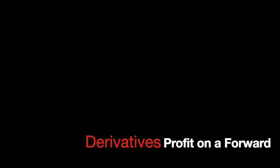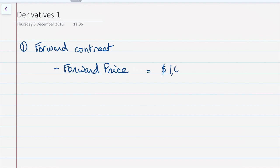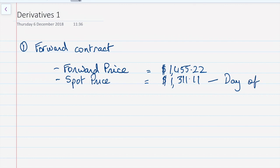Hello everyone and welcome to some derivatives calculations. We're going to start with the profit on a forward. In this example we have a forward that we are going to sell, and the forward price on that contract is going to be $1,455.22. The spot price is going to be $1,311.11, and this is gold, so it's going to be sold in ounces.